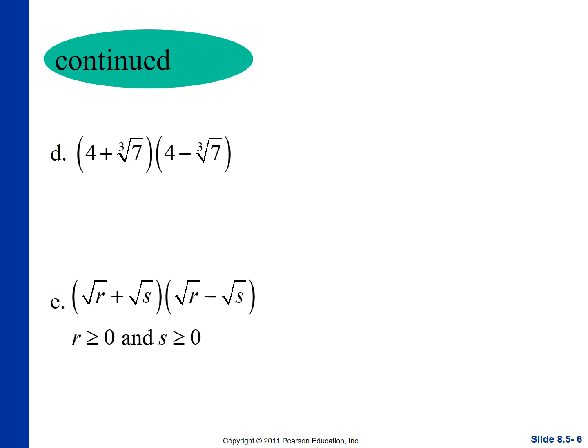Over here we have the same situation — a difference of two squares. We get 16 minus 4∛7 times 4∛7, and that gives us the cube root of 49, because ∛7 times ∛7 equals ∛(7²) = ∛49.